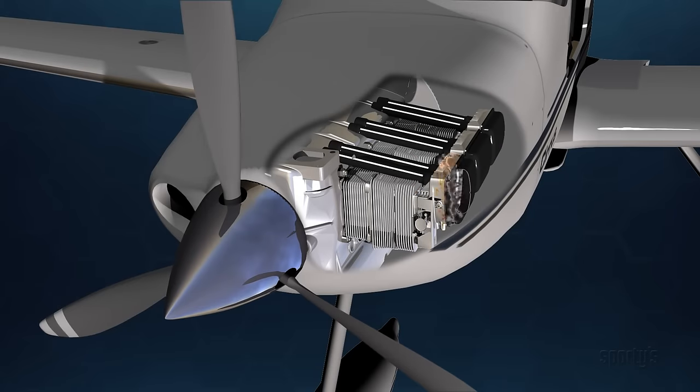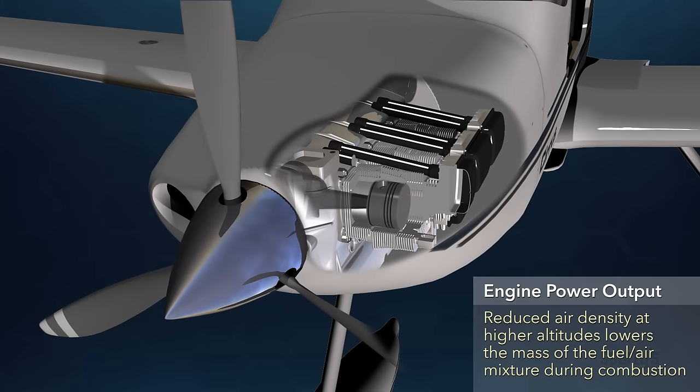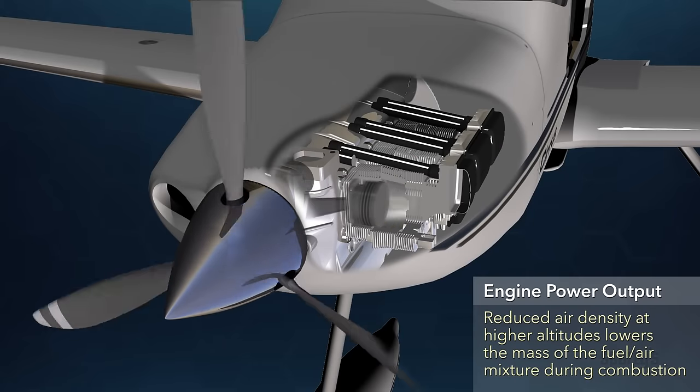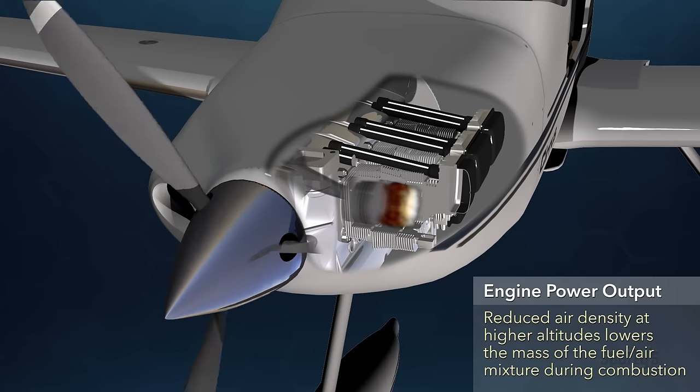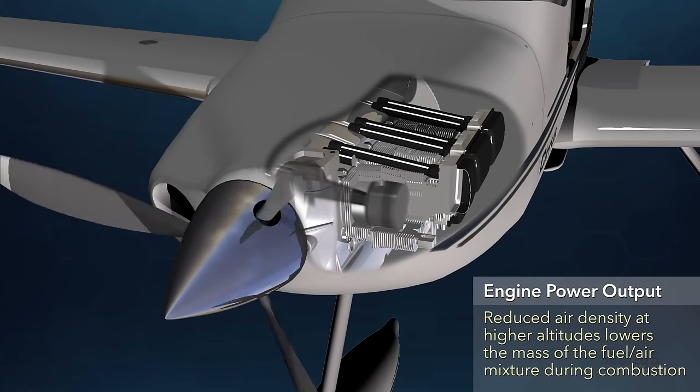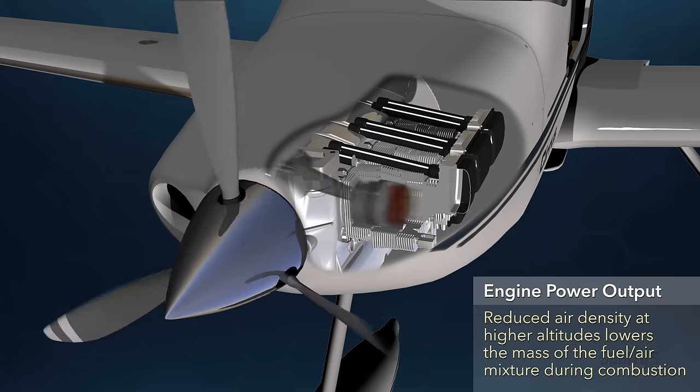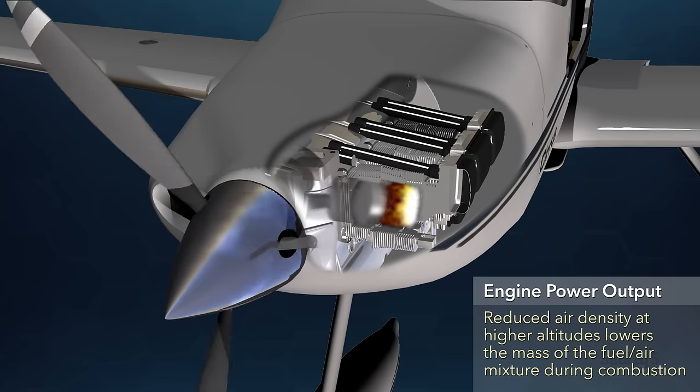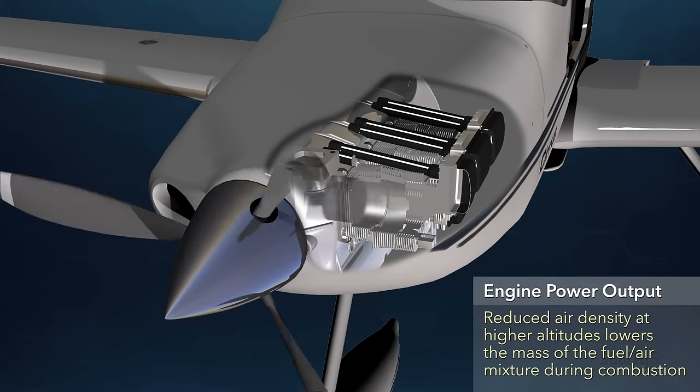The reduced manifold pressure at full throttle is caused by the reduced mass of the fuel-air mixture, which is in turn caused by the reduced air density. The mass of this mixture determines the energy released by combustion and, ultimately, power output.